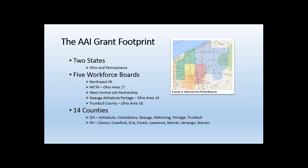The grant project covers two states, as the greater OPEN region suggests. There are five workforce boards: the Northwest Pennsylvania Workforce Board covering six counties in blue, the West Central Job Partnership covering Lawrence and Mercer counties, the GAP — Geauga, Ashtabula, and Portage — in green, Trumbull in yellow, and the Mahoning and Columbiana Training Association (MCTA) in orange. We cover 14 counties and a number of sector partnerships.